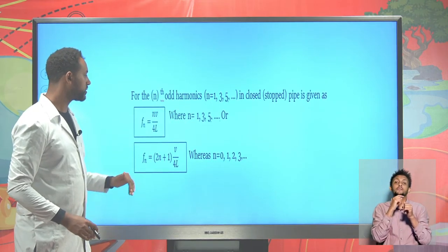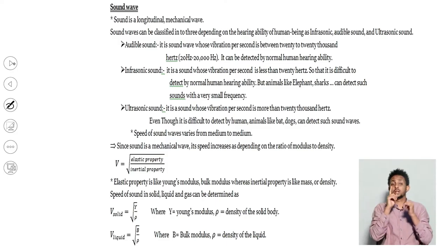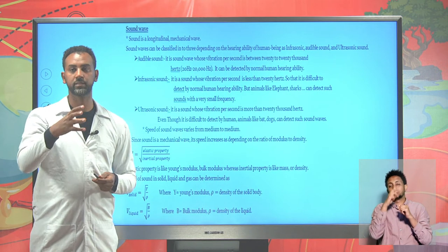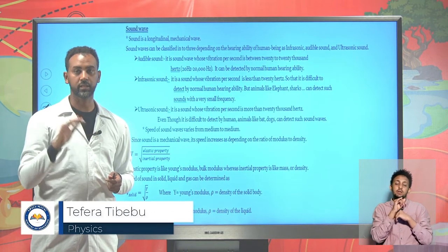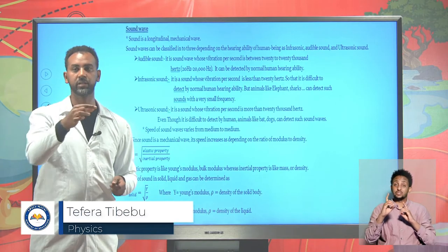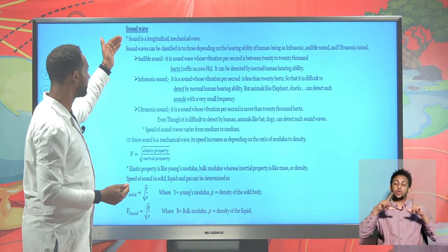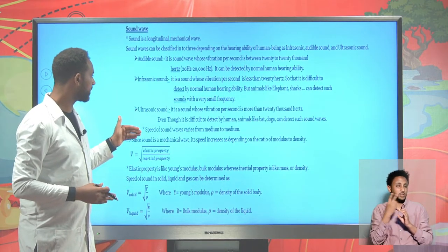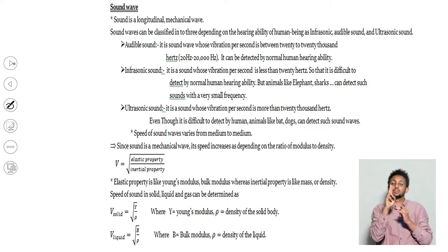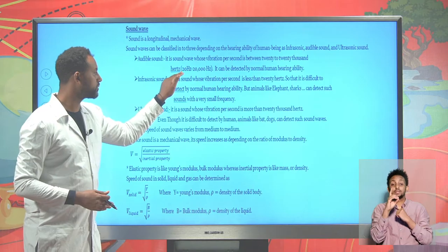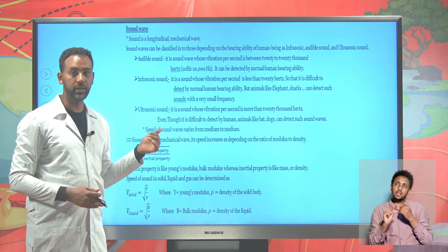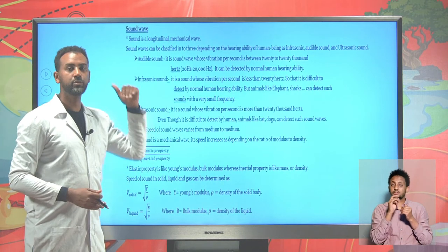Let's discuss sound waves. Sound wave is a mechanical wave and also a longitudinal wave. It's longitudinal because the disturbed particles have the same orientation as that of the wave - as the wave propagates in one direction, the disturbed particles move along that same direction. Depending on human hearing ability, sound can be classified into three categories: audible sound, infrasonic, and ultrasonic. Audible sound ranges from 20 Hz to 20,000 Hz. Infrasonic has a frequency less than 20 Hz, and ultrasonic has a frequency greater than 20,000 Hz.